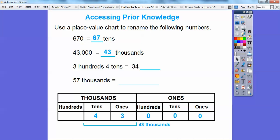340 tens. 340 tens is going to be 34 tens right there. 300 and 4 tens. Here's my 4 tens right here. 340 tens is 34 tens. And then 57,000 is just 57,000 right there. Nice and easy.